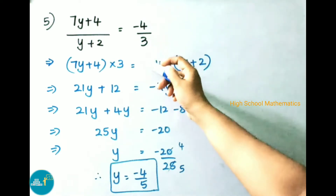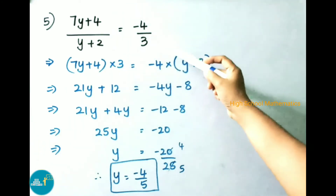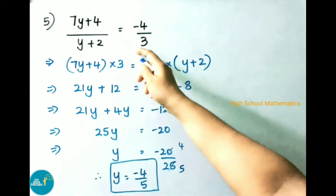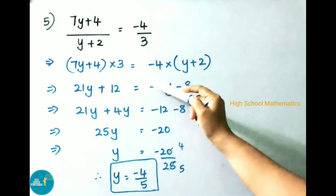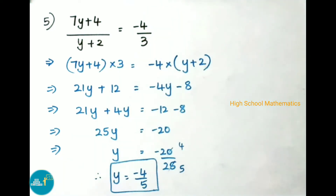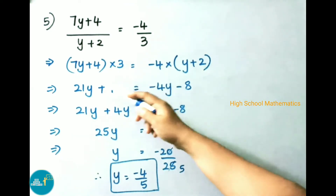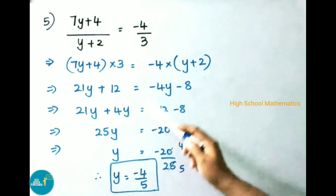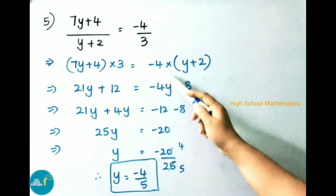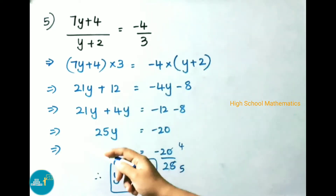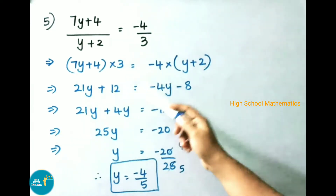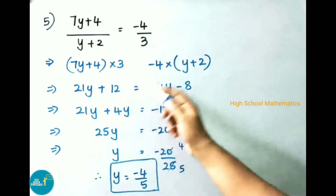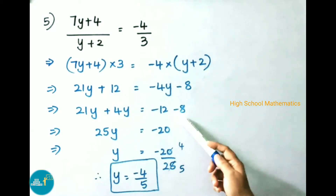See now question number 5: (7y + 4) / (y + 2) = -4/3. Now we have to do cross multiplication: (7y + 4) × 3 = -4 × (y + 2). Let us multiply: 21y + 12 = -4y - 8. That implies 21y, and on transposing minus 4y becomes plus 4y, equals 12 on transposing minus 12 plus this minus 8.